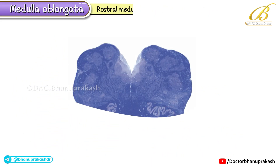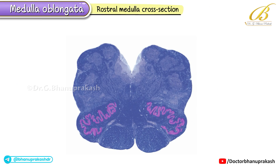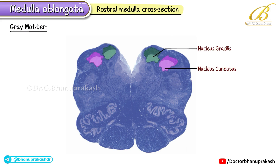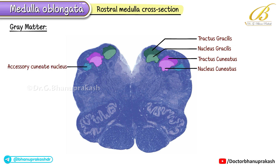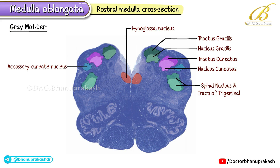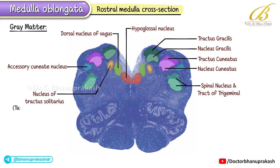Now we reach the rostral medulla, where we find the olives clearly visible in cross-section. The nuclei gracilis and cuneatus are now well-defined, each capped by its respective tract, processing proprioception, fine touch, and vibration. There's also an accessory cuneatus nucleus, just dorsolateral to the cuneatus nucleus. The spinal nucleus and tract of the trigeminal remain in place. The central gray matter contains nuclei such as the hypoglossal nucleus, the dorsal nucleus of vagus, and the nucleus of the tractus solitarius, involved in taste and visceral sensations.